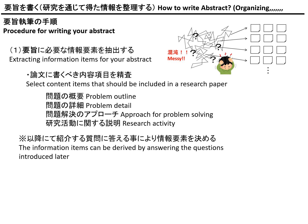So far, if you complete the problem outline and problem detail, that means you have completed the detailed explanation about the problem you are going to solve. Then you need to determine the approach for problem solving. One thing required when writing an abstract is to clearly define how you are going to solve the problem.